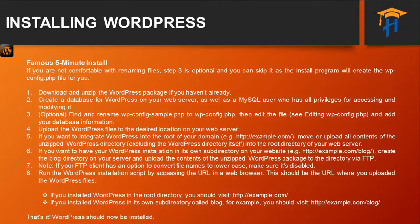Starting with the first step: download and unzip the WordPress package if you haven't done already. Create a database for WordPress on your web server as well as a MySQL user who has all privileges for accessing and modifying it. The optional step 3, which I have already mentioned: find and rename the WordPress configuration sample file to wp-config.php, and then edit the file by following the 'editing wp-config.php' session that we will be covering next.